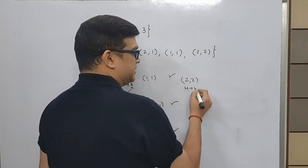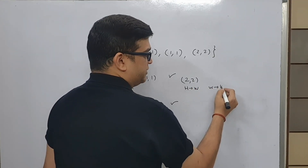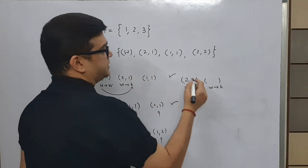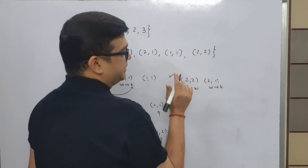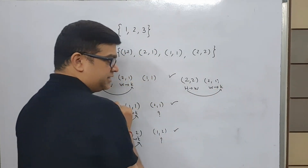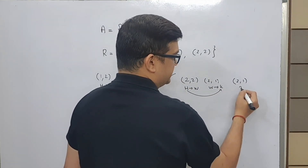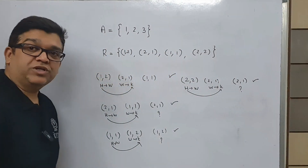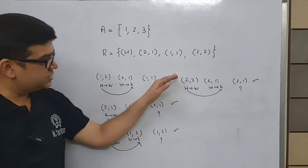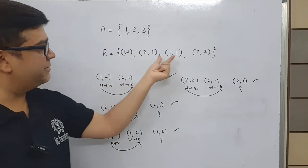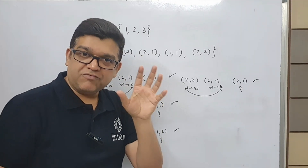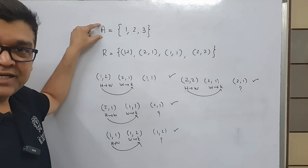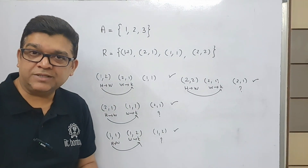It is like husband is related to wife. Let us see whether wife has a kid — whether 2 is related to something. Yes, 2 is related to 1, so wife has a kid. Now whether husband accepts the kid — whether (2,1) is present in the relation. Yes, (2,1) is present in the relation. So we have a positive signal from each element, every ordered pair we have checked. And this relation R defined over set A is coming out to be transitive.